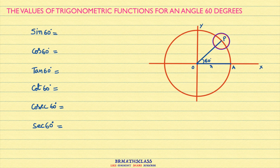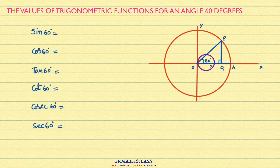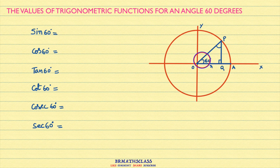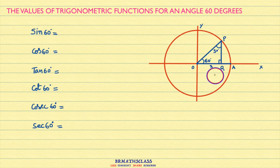Now, draw PQ which is perpendicular to the X axis. We rotated through 60 degrees and this line is perpendicular to the X axis, so this angle will be 90 degrees. What about the remaining angle? We know that in a triangle, the sum of all angles is 180 degrees. This angle is 90, this is 60, so the remaining angle is 30 degrees.